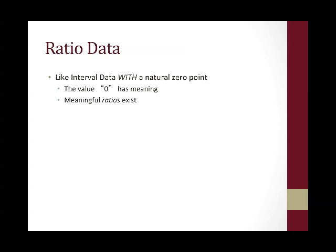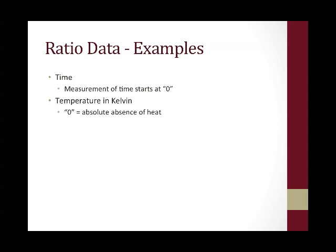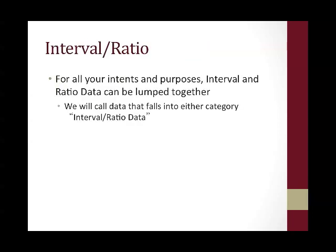Ratio data is just like interval data, except that it does have a natural zero point — so the value zero has meaning, and therefore you can create meaningful ratios. Time is an example of ratio data because a measurement of time does start at zero. Temperature in Kelvin, as opposed to Celsius, is considered ratio data because the zero on a Kelvin scale represents absolute absence of heat. But for all intents and purposes, interval and ratio data can be lumped together — we will call data that falls into either category interval ratio data. The statistical analyses are very similar or the same for both types, so it's only important to identify whether it fits into either interval or ratio.